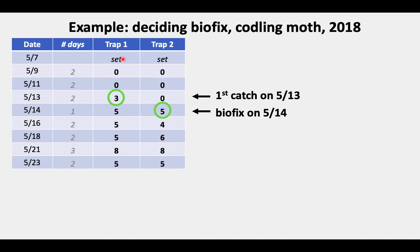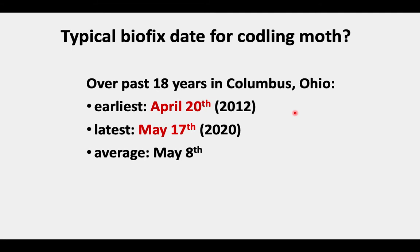One final example: in 2018, there were just two traps set up on the 7th of May. We checked them two days later, two days later, two days later. We had zeros and then a three and a zero, and then a five and a five. So first catch was on May 13th. I called biofix that next day on the 14th of May.